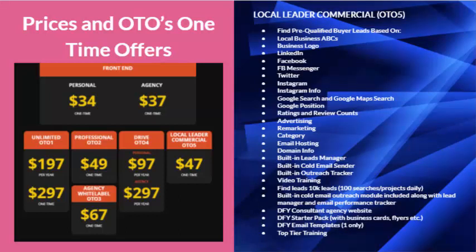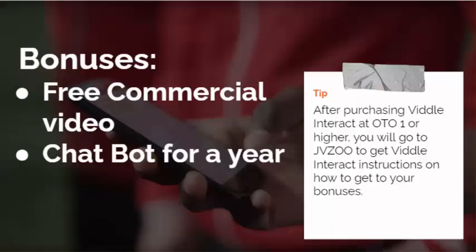OTO5 is a Local Leader Commercial — a $47 add-on. There are a lot more features there. It includes Google Search and Google Maps Search, Rankings and Review Counts.